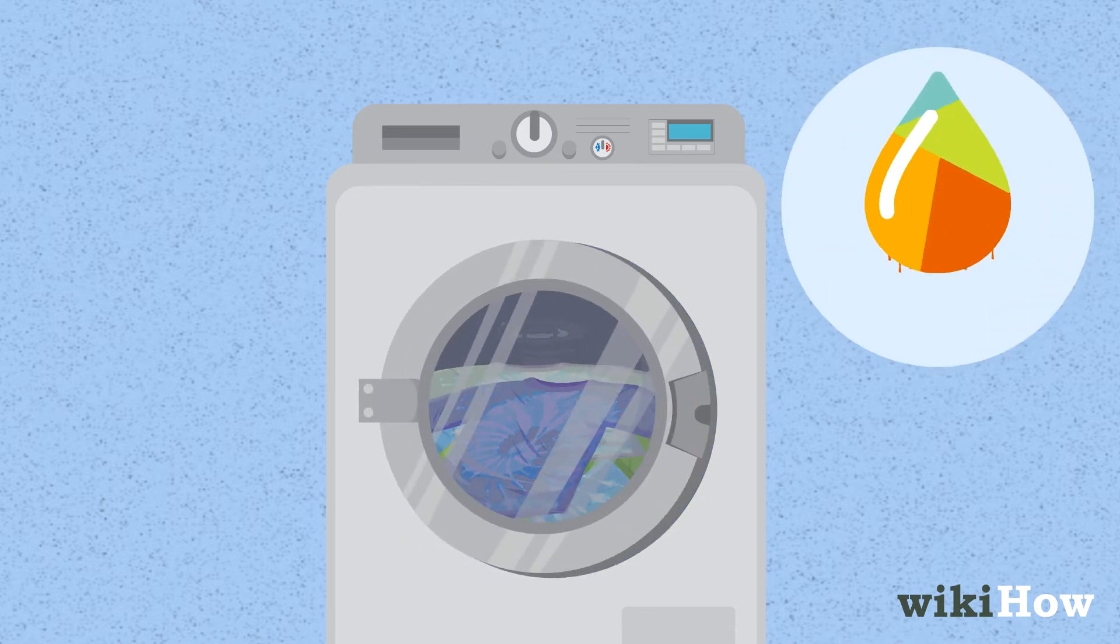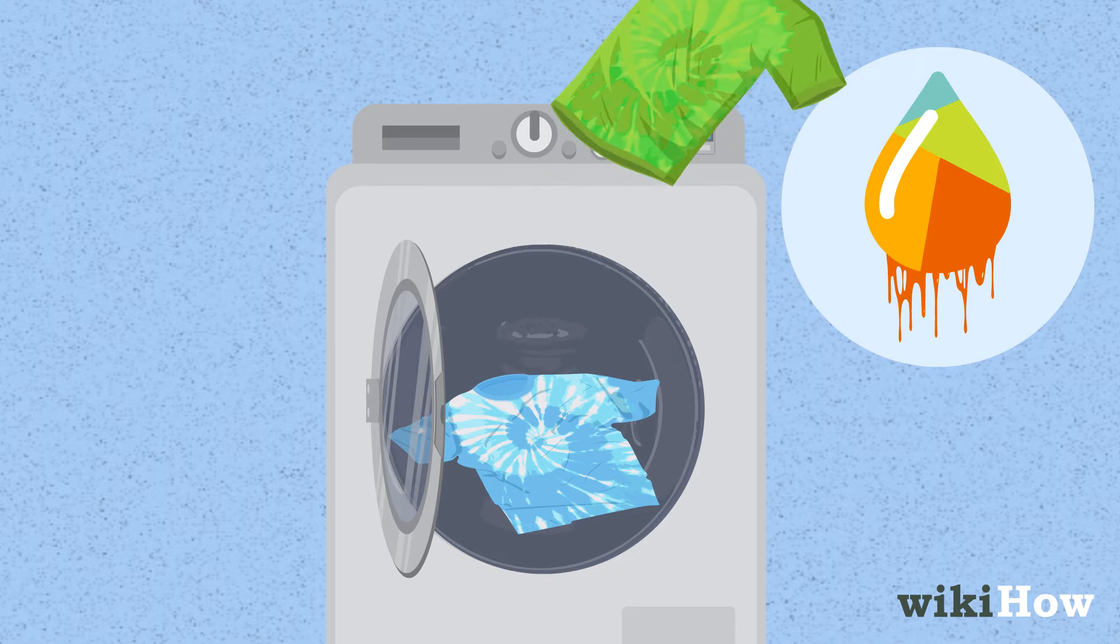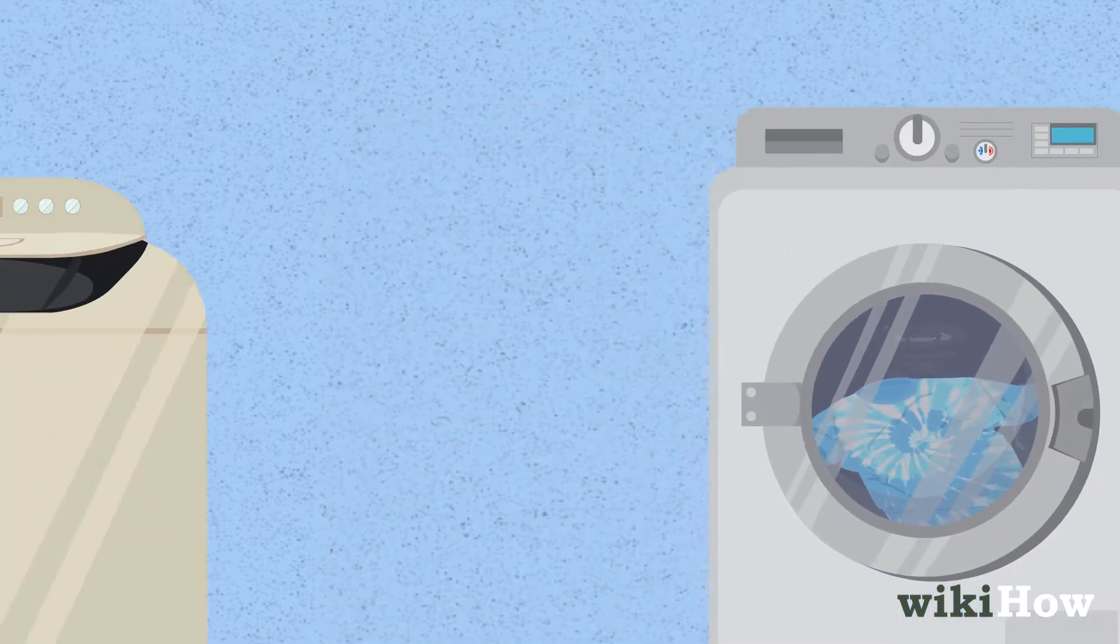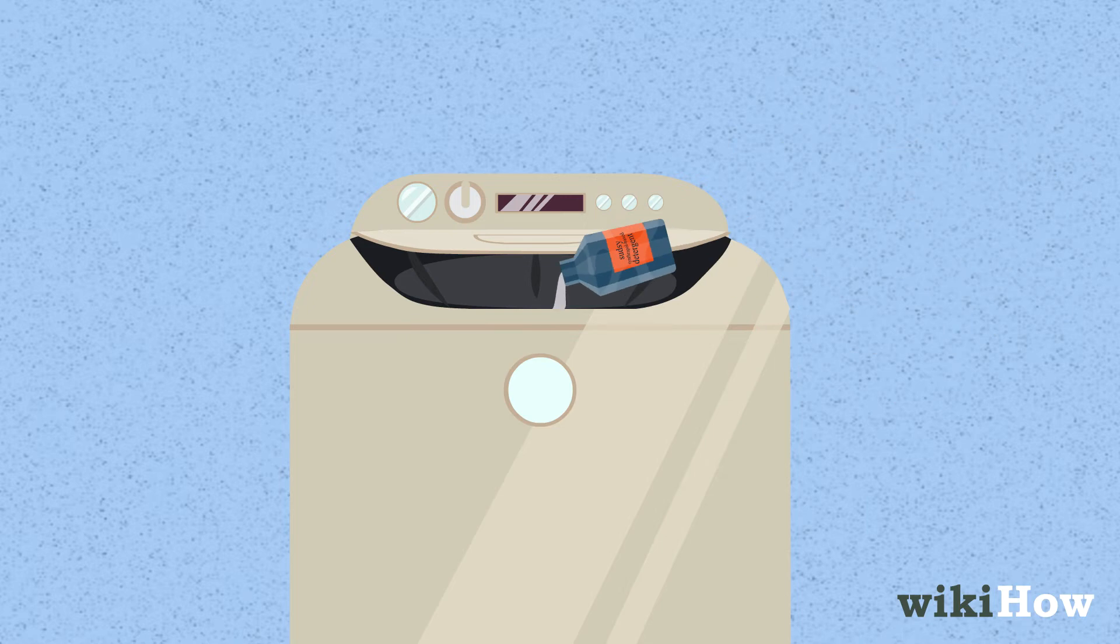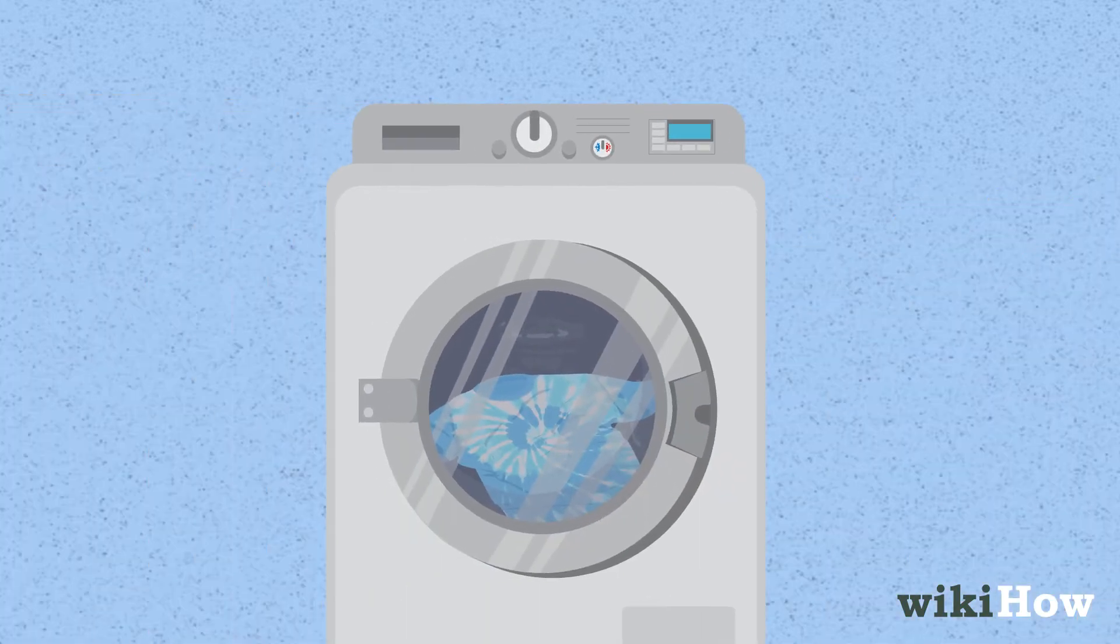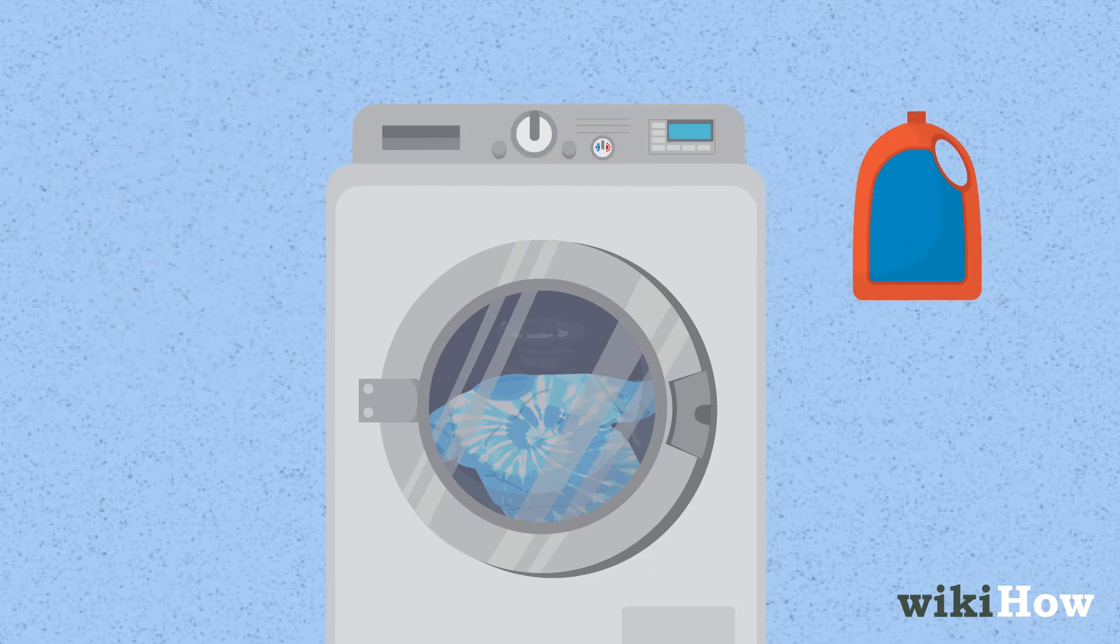If you're worried about the colors bleeding a lot, you may wish to wash each item separately. For top-loading machines, use a sudsy, synthrapol-based detergent, since these are more effective than other detergents for washing out excess dyes. However, use regular detergent for front-loading machines to avoid creating a flood of suds.